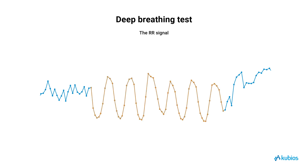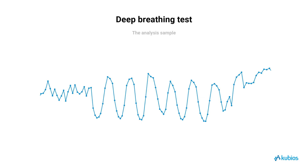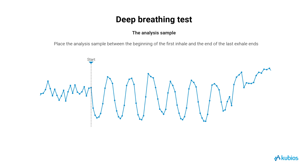As a result, a healthy individual's heart rate shows clear modulations synchronized with the breathing cycle, accelerating during inhalation and decelerating during exhalation. These fluctuations can be easily observed even through manual pulse palpation at the wrist during deep breathing exercises. Place the analysis sample between the beginning of the first inhale and the end of the last exhale.